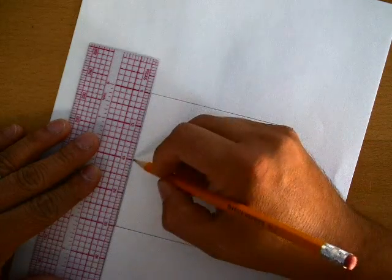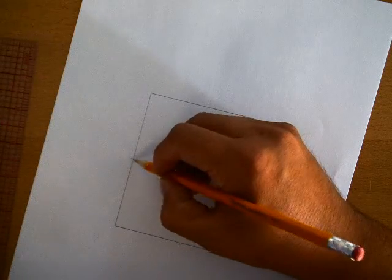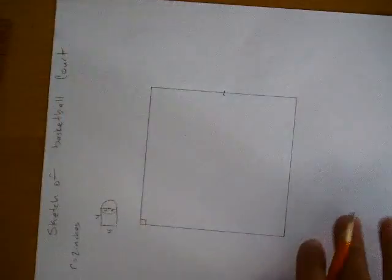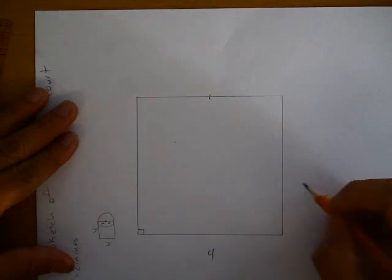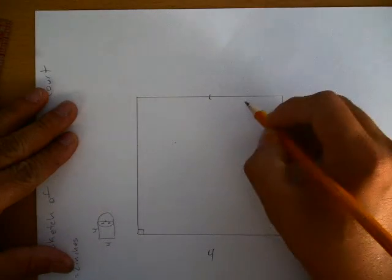I'm going to put a mark at two. This will help me with my compass work. That's the midpoint of this line right here. I can label in now. I've got a four here, a four here. These are twos.